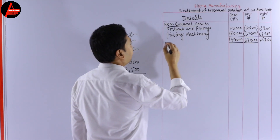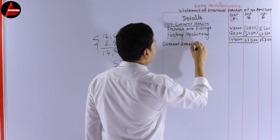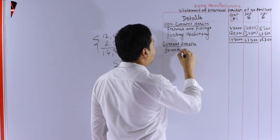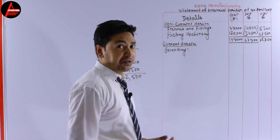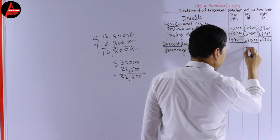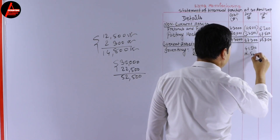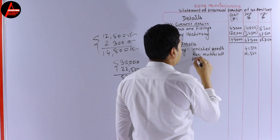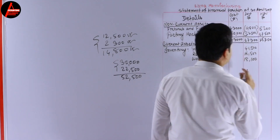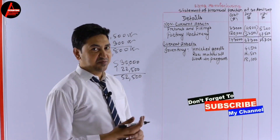The second step is current assets. In this question we have inventory, and there are three types of inventory in a manufacturing account. The first is finished goods at $41,500. The second is raw materials at $16,500. The third is work in progress at $18,100. This is the only question where you have all three types of inventory: finished goods, raw materials, and work in progress.